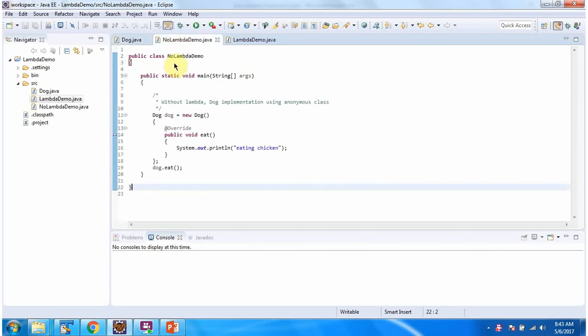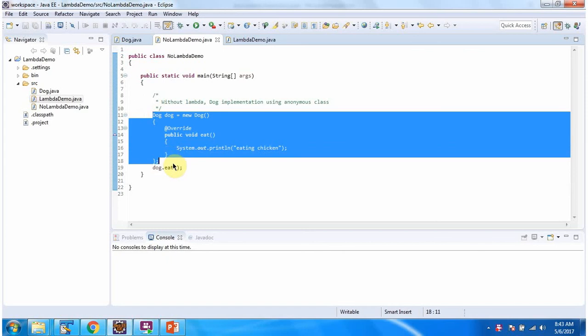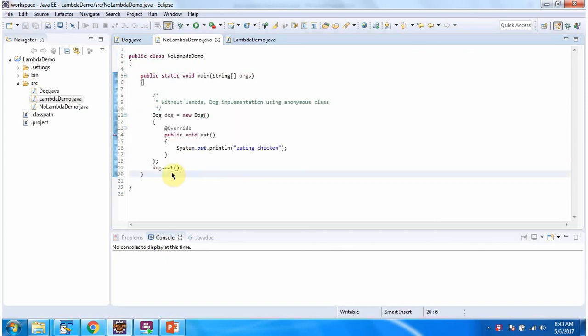Here I have defined the class NoLambdaDemo. Without Lambda, using anonymous class, we can provide implementation of dog like this. And here I am calling the eat method. I am running this program. Here you can see the output.